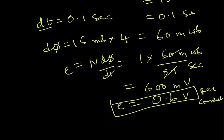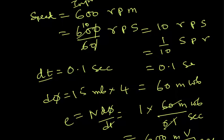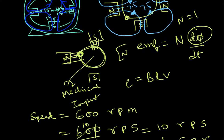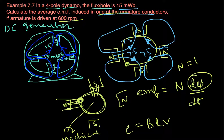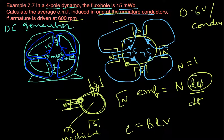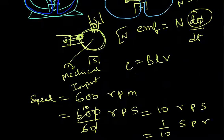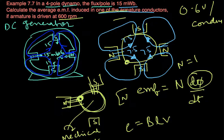So the answer is 0.6 volts per conductor. This is just applying what you know to calculate the EMF. We'll try to solve more problems like this.